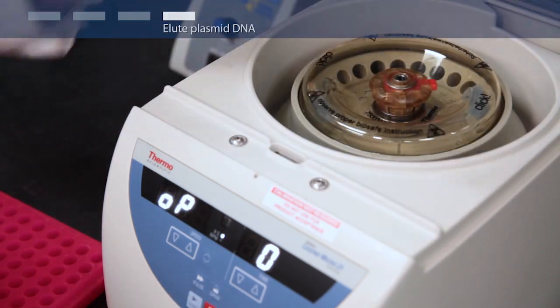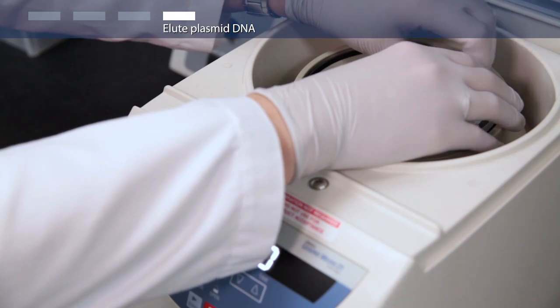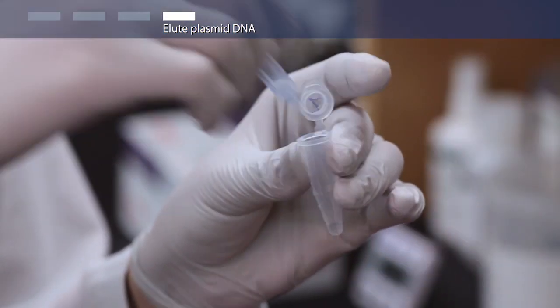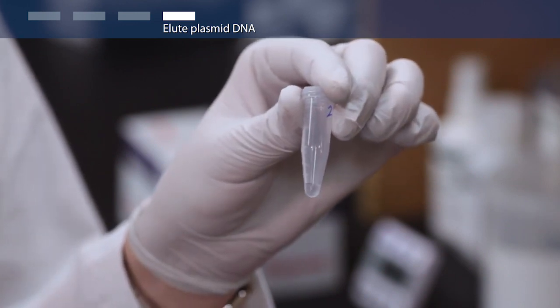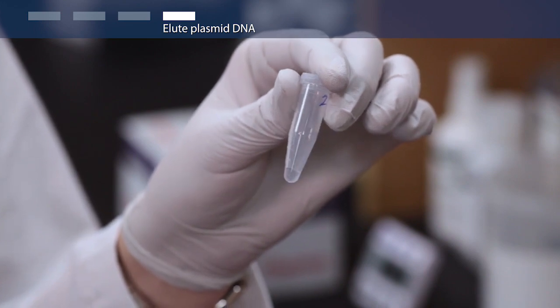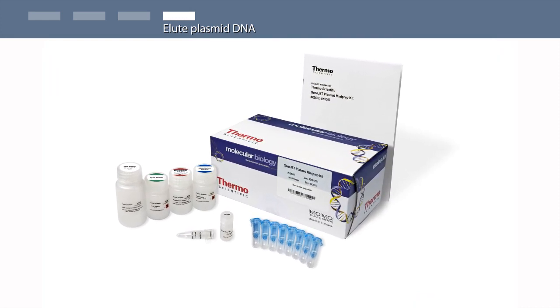To elute your isolated plasmid DNA, transfer the spin column into a clean microcentrifuge tube and add 50 microliters of elution buffer to the center of the spin column membrane. Leave for two minutes at room temperature, then centrifuge for two minutes and discard the column. Your molecular-grade plasmid DNA is in the microcentrifuge tube.